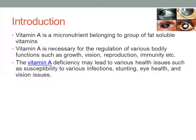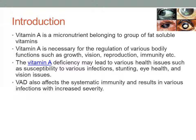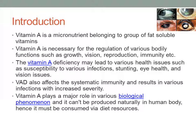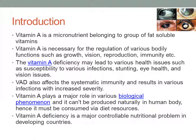Vitamin A deficiency leads to various health issues such as susceptibility to infections, stunted growth, and affects eye health. Affected persons suffer from various vision issues. Vitamin A deficiency also affects systemic immunity, resulting in infections with increased severity. Vitamin A plays a major role in various biological functions, and since it cannot be produced by the human body, it must be taken in the daily diet.